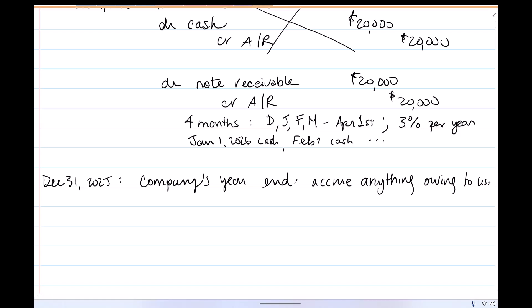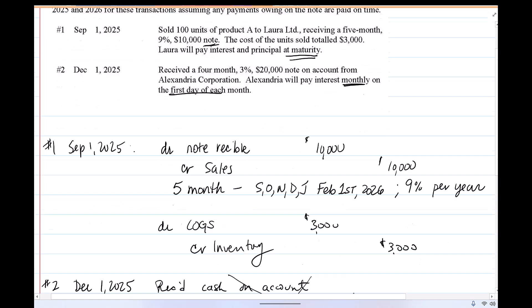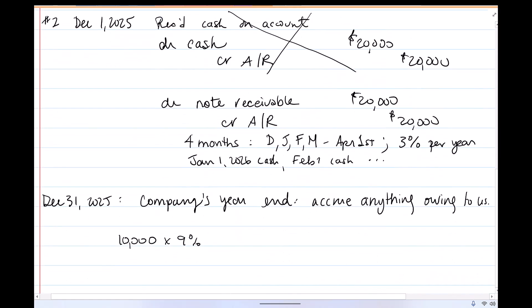So we have these two notes. We have the $10,000 note, which is at 9%. And September, October, November, and December have gone by. So that's four months of interest that we have earned and is owing to us. So that's $300. And on the $20,000 note, which is at 3%, just pretty much an entire month has gone by. So that is $50.